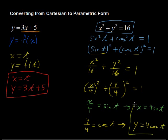And so this is our set of parametric equations to relate to our original Cartesian equation x squared plus y squared equals 16.